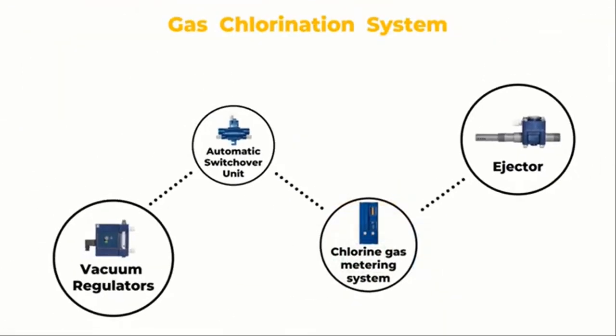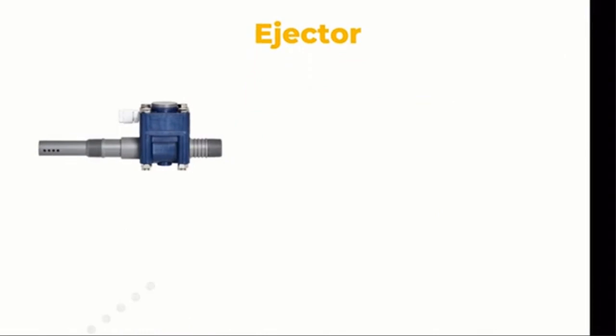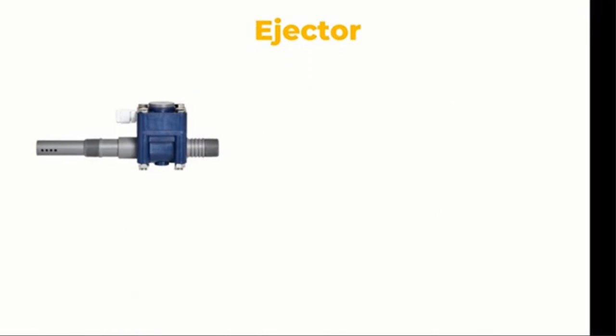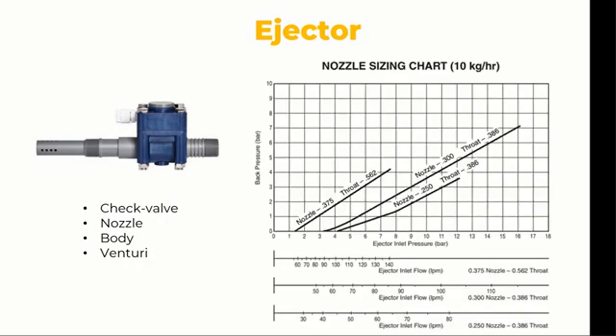The ejector is the final part. It's a mechanical mechanism that controls the system by creating a vacuum and combining chlorine gas and water. It consists of the following components: the venturi, check valve, and nozzle body. Manufacturers create many different ejectors. To determine the water flow and pressure needs for each ejector, consult the nozzle performance charts and curves found in the manufacturer's instruction manuals. Here is the nozzle ejector curve illustration.